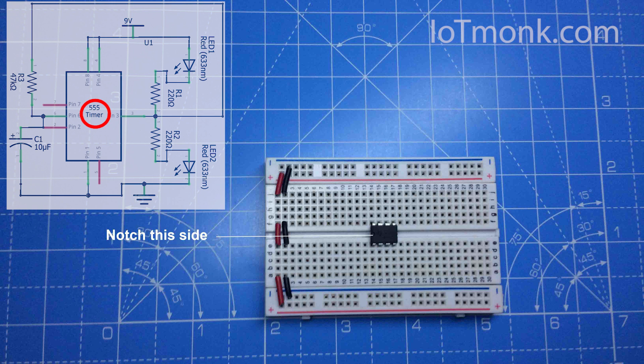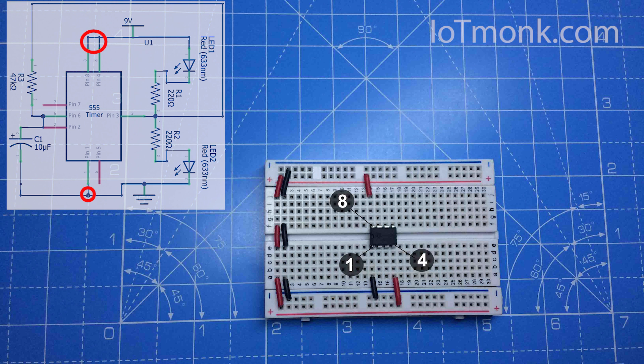Then connect pin number one to the ground, pin number four to the positive rail of the breadboard, and pin number eight to the positive power rail. Refer to this image for reference.